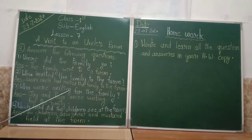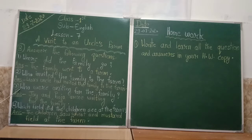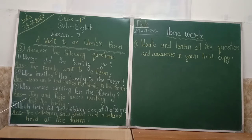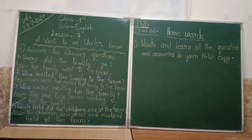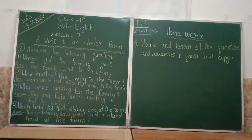Question number three — who were waiting for the family? Yahan pe question ka matlab hai kaun kaun hain jo us family ke liye intezaar kar rahe hain? Ab answer hai: Jay and Puja were waiting for the family. Uncle ke bachche hain — Jay and Puja — woh family ke aane ka intezaar kar rahe the.